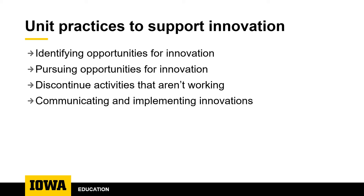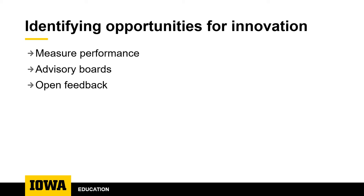Identifying opportunities for innovation starts with measuring performance. If you don't know the areas in which you might improve, you can't identify priorities for innovation efforts. Other sources of information about opportunities for innovation might include advisory boards, who might recognize trends and changes in the external environment, or open feedback meetings with students, customers, and members of the workforce and other stakeholders.